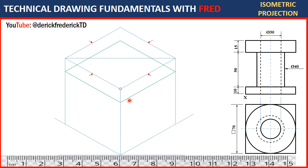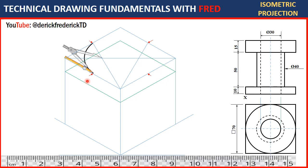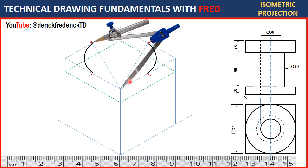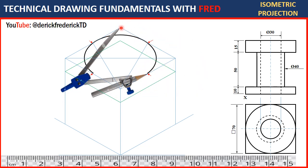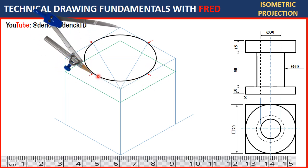Draw lines from here to this midpoint and from here to this midpoint — thin lines. Get your pair of compass, needle at this point of intersection, stretch to this midpoint, and describe an arc from this midpoint to this midpoint. Do the same thing here — needle here, stretch to this midpoint, describe an arc. Then needle at this point, stretch to this midpoint and draw an arc from this midpoint to this midpoint. Do the same on the last side and that gives you the complete round top.